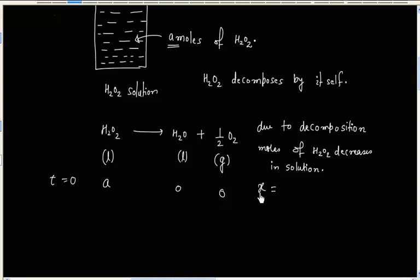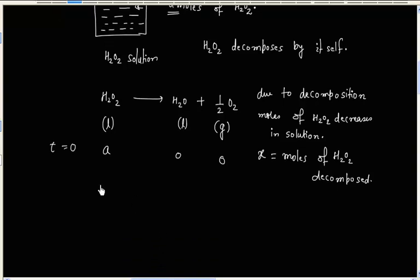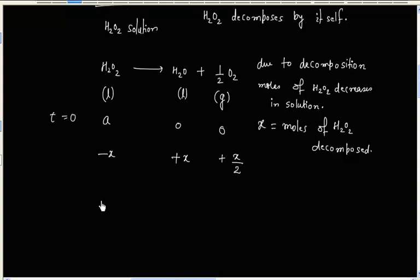So, it will form X moles of water and X/2 moles of O2. So, we will have A minus X mole of H2O2 left, X mole of H2O and X/2 mole of O2.